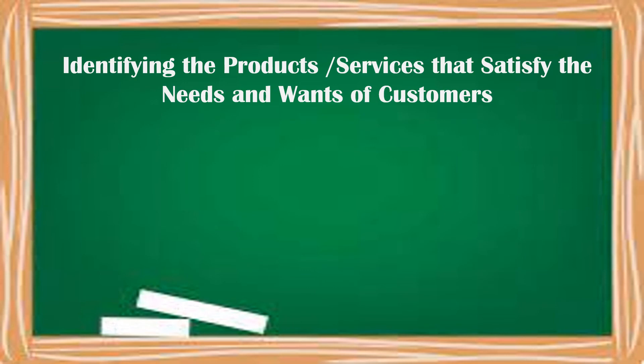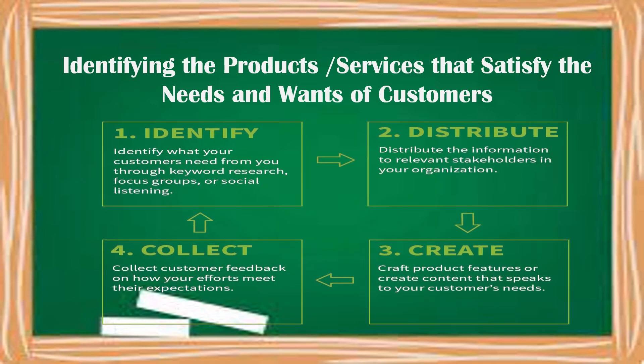In order for us to satisfy the needs and wants of our customers, here are the four things that we must remember. First, we have to identify — identify what your customers need from you through your keyword research, focus group, or social listening. After that, you have to distribute the information to relevant stakeholders in your organization. After distributing, you have to create — craft product features or create content that speaks to your customers' needs. And lastly, collect — collect the customer feedback on how your efforts meet their expectation.